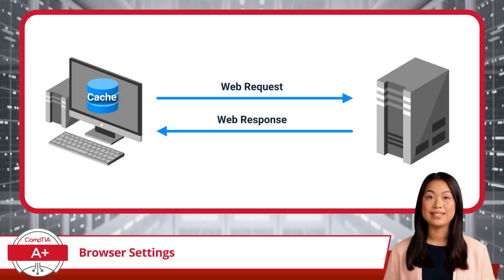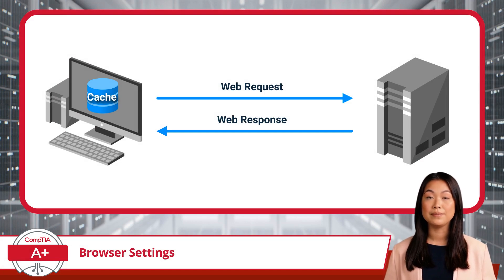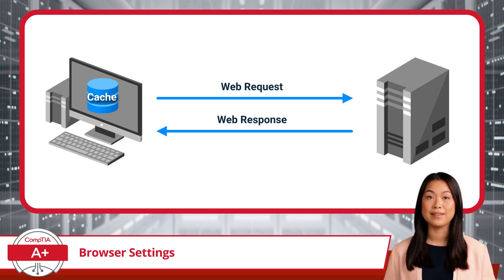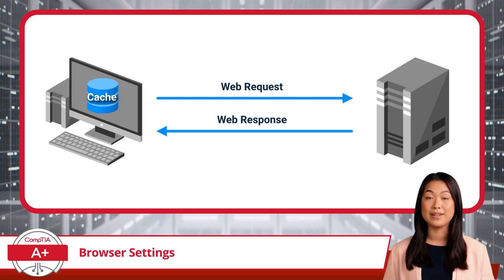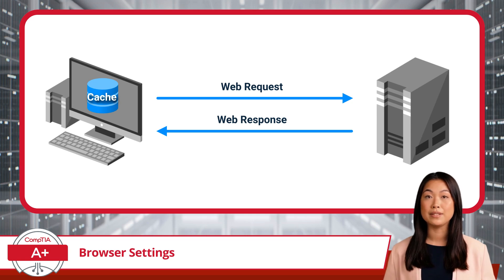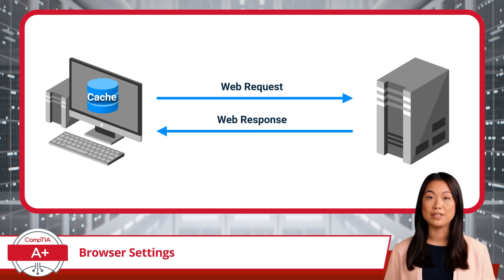While browsing data includes things like history and cookies, the cache is another important piece of the puzzle. The cache is essentially a temporary storage space where your browser saves copies of websites, images, and other resources to make future visits faster. But over time, cached data can become outdated, causing websites to load incorrectly or even creating security risks if sensitive data is cached. Clearing your cache ensures you're seeing the most up-to-date content and minimizes potential privacy risks. It also frees up storage space, which can improve your device's performance.